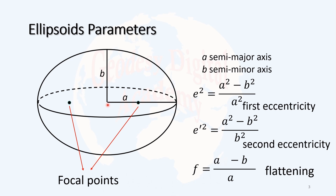The distance from the center to the farthest point of the ellipse is called the semi-major axis, and the shortest one, shown here by b, is called the semi-minor axis. Three parameters are also defined for an ellipse: first, eccentricity, which is the ratio of the difference between the squared semi-major and semi-minor axes to the square of the semi-major axis. Similarly, we can define the second eccentricity and flattening.